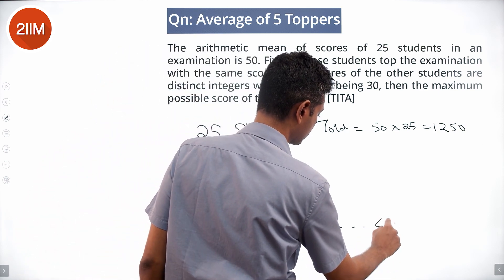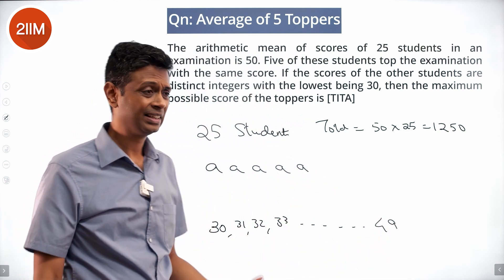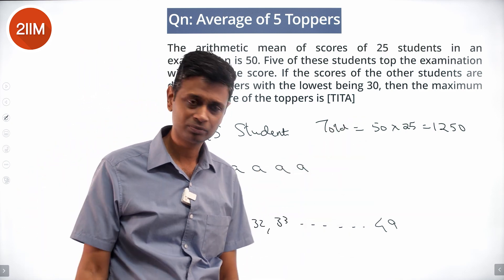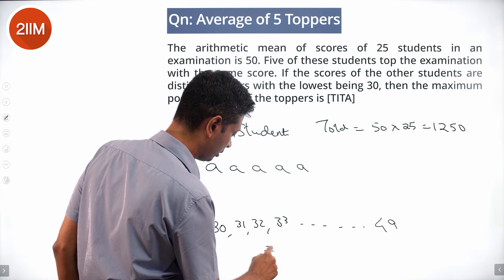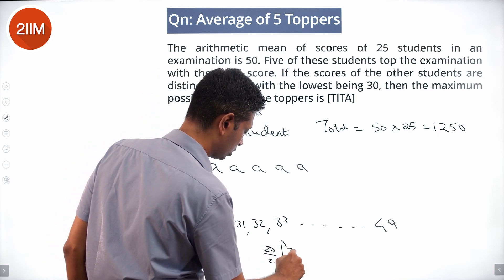Find the sum of all of this, add 5a, equated to 1250. This is an arithmetic progression, 20 terms. Sum of all this will be 20 by 2 into 30 plus 49, or 10 into 79.